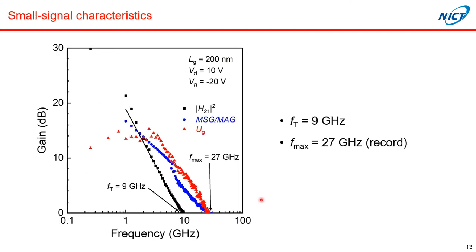What I'm showing here is the small-signal RF characteristics of the same device with a gate length of 200 nm. This measurement was done at VD of 10 V and VG of −2 V. FT was estimated by extrapolation of current gain, and it was estimated to be 9 GHz. On the other hand, Fmax was determined by the frequency at which both MAG and unilateral gain become 0 dB, and it was 27 GHz. I'd like to mention that this Fmax value is the record for gallium oxide FETs.